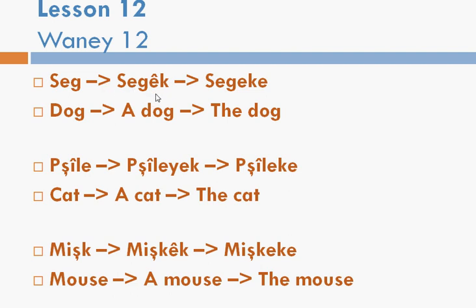For Sagak, you just add -ek to make it 'a dog'. Sagak. It is the same for the mouse, Mishka. But for 'a cat', you have to add -yek instead of -ek. This is only because Pshilak ends in a vowel. The good thing about having a vowel at the end is that when you add 'the', you only add -k. But for the other two, since dog and mouse end in a consonant, in Kurdish you have to add -aka. Just pause the video on each part you don't understand.